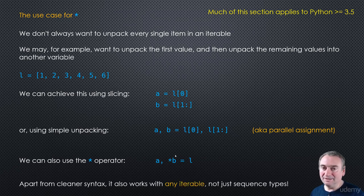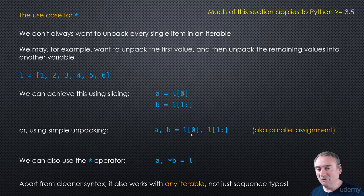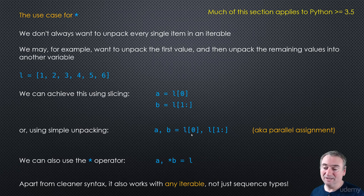It's cleaner syntax — a little simpler to write. But the other main difference is that it applies to any iterable, not just sequence types. We need sequence types in order to be able to slice — we need an indexable type with the concept of element 0, element 1, element 2. But not all iterables have that property. For example, sets and dictionaries — you can't slice them because there's no ordering. However, the star operator will work with any iterable type.